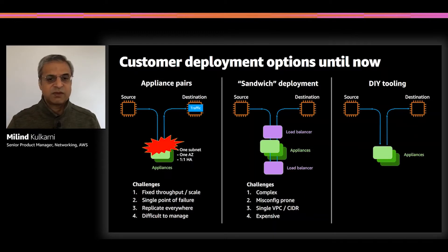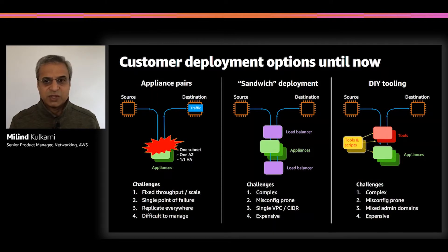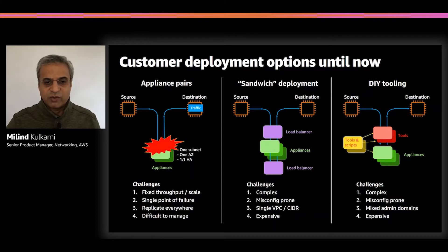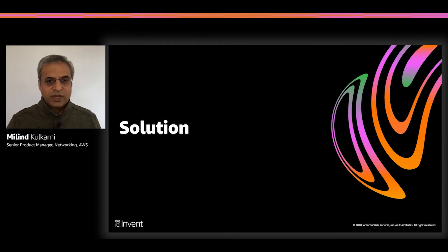When some customers say, forget it, I'll try to do it myself, they try to build tools in-house, get something from open source, put some things together. However, this also tends to be very complex, misconfiguration-prone, and difficult to keep track of going forward, and tends to be expensive. Looking at this as AWS, 90% of our innovation comes from what customers tell us — so this is where we came up with the idea of a Gateway Load Balancer.